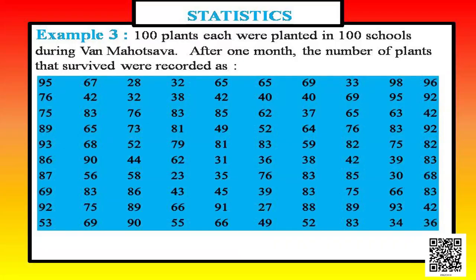Now we come to the last type: classified data. In example 3, 100 plants each were planted in 100 schools during one Mahotsav. After one month, the number of plants that survived were recorded — values such as 95, 67, 28, 32, 65, and so on, giving 100 numbers total. Since there are so many numbers, we cannot simply group them individually, so instead we make a classified frequency distribution table.